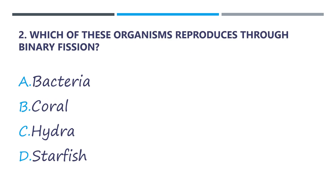Number 2. Which of these organisms reproduces through binary fission? A. Bacteria. B. Coral. C. Hydra. And letter D. Starfish.